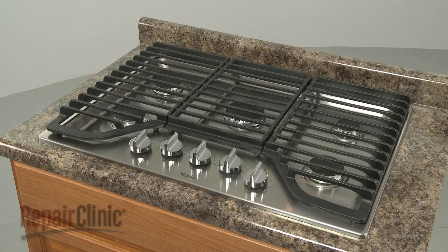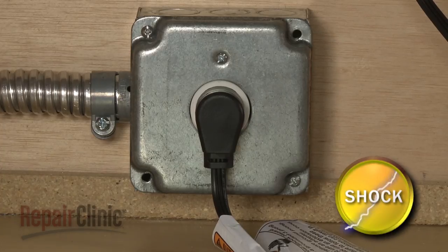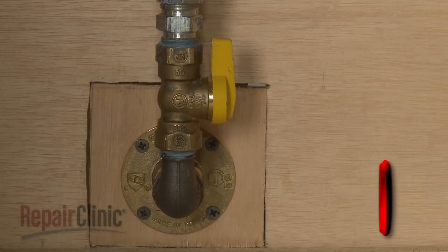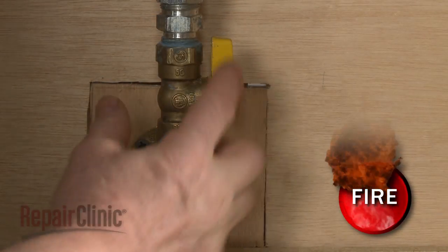Before you replace the center spark electrode in your gas cooktop, be sure to unplug the power cord and shut off the gas supply.